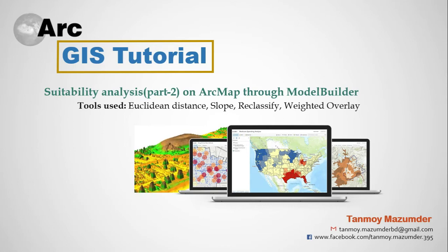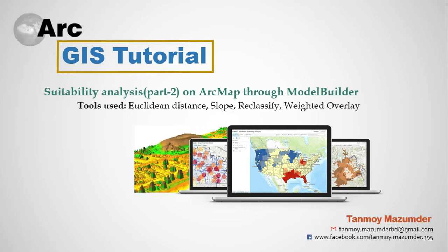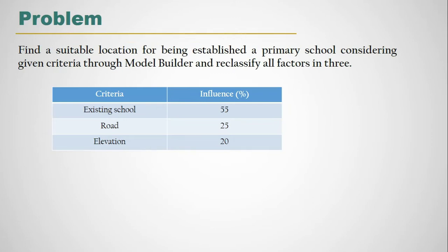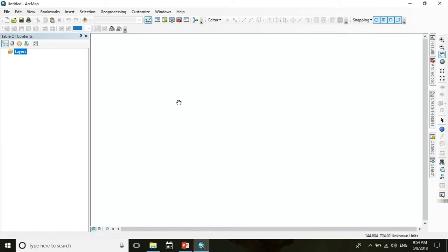Hello everyone and welcome back. In the previous session we learned how to analyze the suitability of a location manually. In this session we will analyze suitability on ArcMap through Model Builder. The tools used for suitability analysis are Euclidean distance, slope, reclassify, and weighted overlay. We solve the same problem as the previous session: find a suitable location for establishing a primary school considering given criteria through Model Builder, reclassifying all factors into three classes. Our criteria are existing school, road, and elevation.